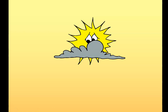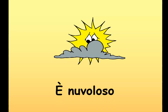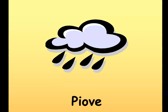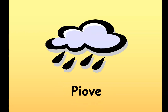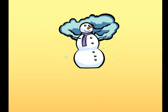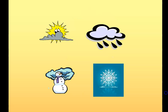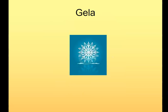Allora, altre frasi. Some different phrases — this time they start with è, meaning 'it is': è nuvoloso, it's cloudy. Then piove, meaning it's raining. Poi nevica, it's snowy. E finalmente, giella, which means it's icy.